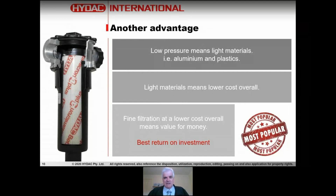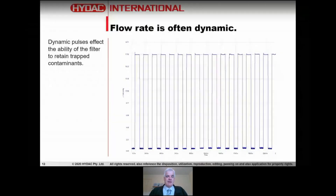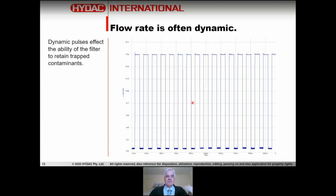There are some disadvantages. One important consideration is that in the return line you can get a changing flow rate all the time. For example, a reading of an actual return line showed flow going from basically zero to 18 liters a minute - on, off, on, off. Dynamic pulses will affect the ability of the filter to retain trapped contaminants. For that reason alone, return filters may not be enough to ensure your cleanliness target is met - you may have to use other forms of filtration such as offline filtration.